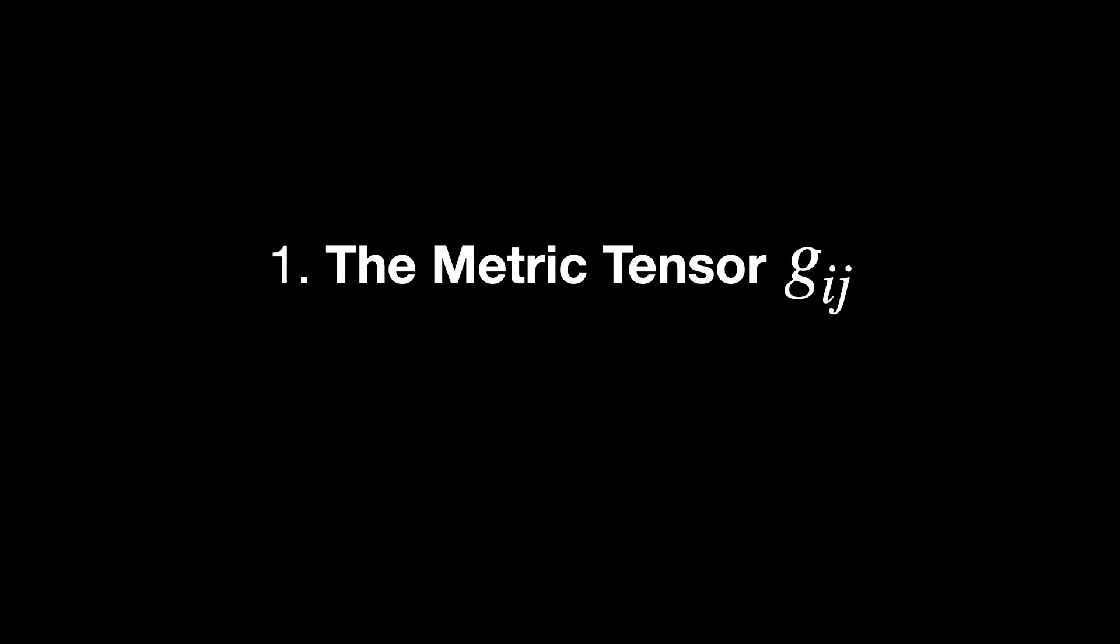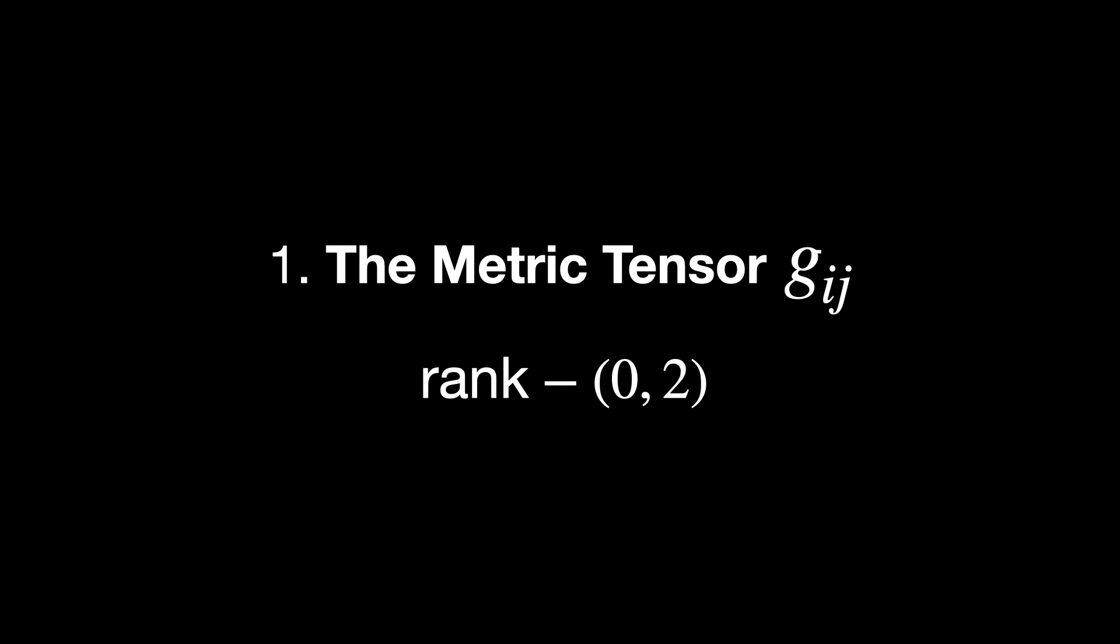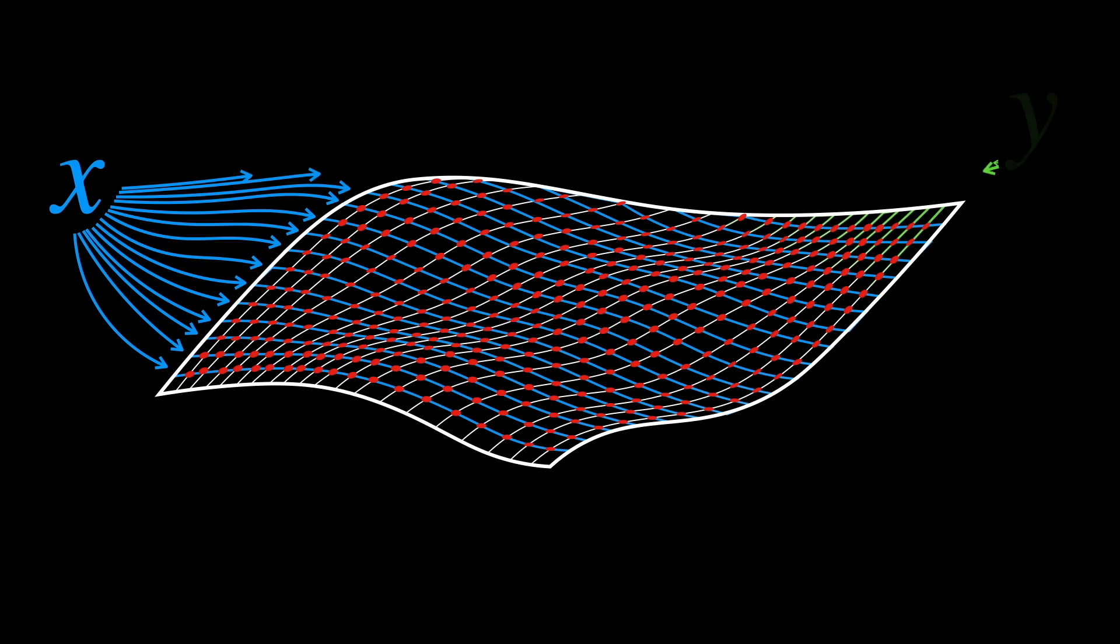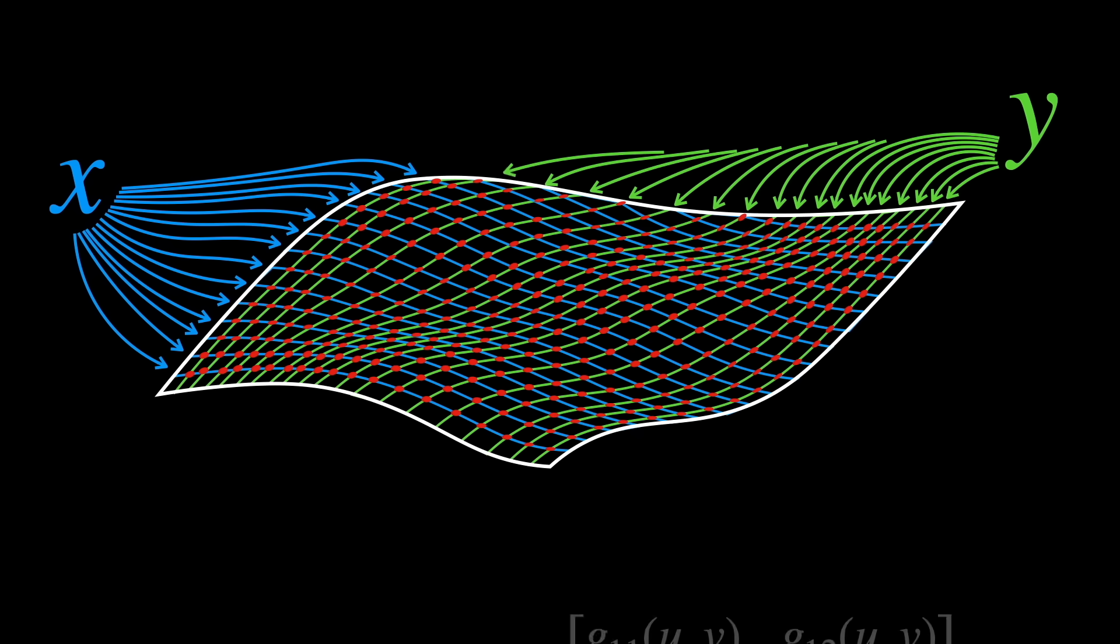First, the metric tensor, gᵢⱼ. The type is rank (0,2). It measures distances and angles on a manifold, like Riemannian metric tensors or pseudo-Riemannian ones, just like in general relativity.